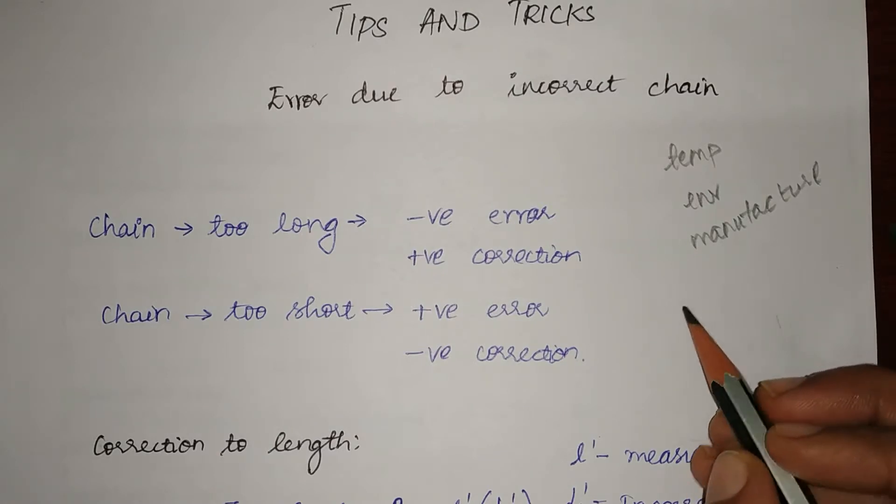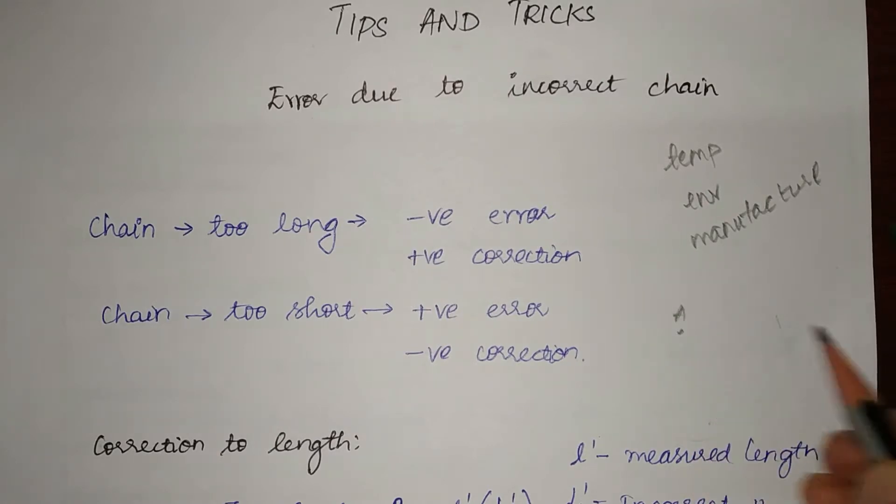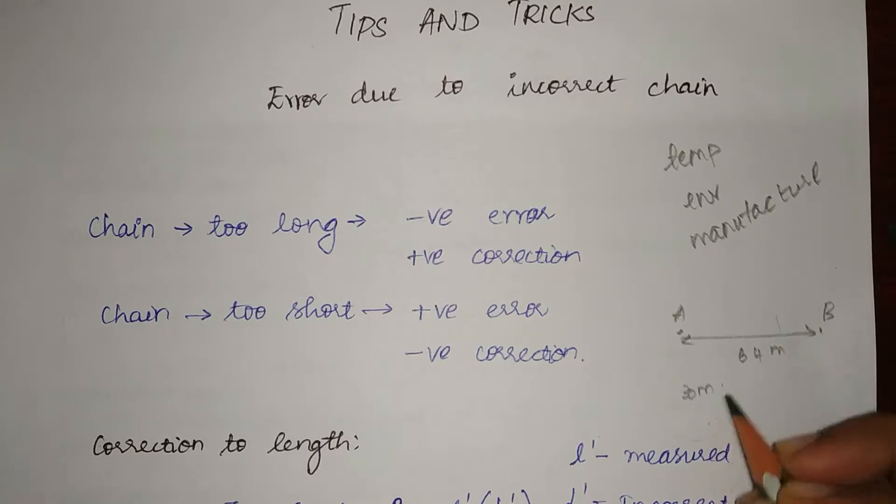Say I have to measure a distance between A and B, and the distance is 64 meters in real. I am using a tape of 30 meters, or at least I think it is 30 meters, but in actual it is 32 meters long.